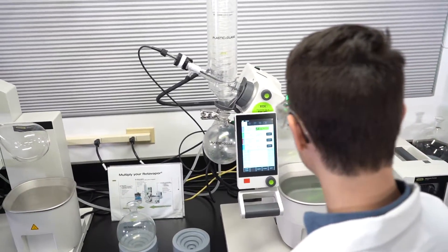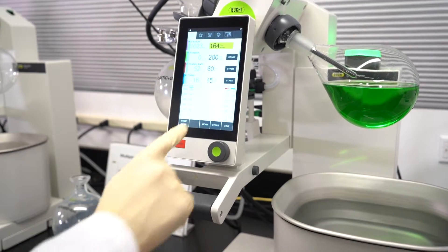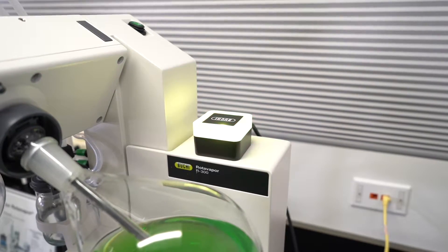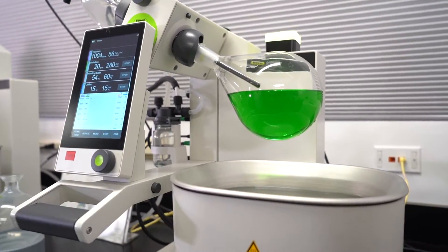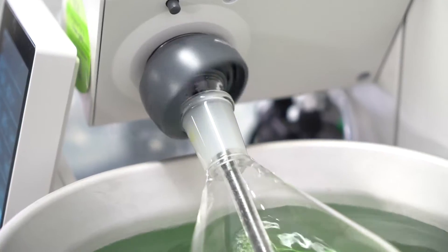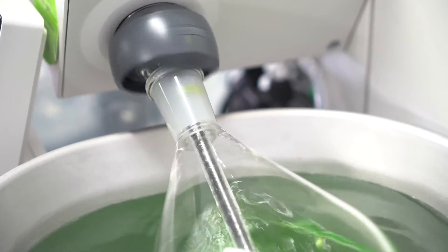However, usually some heat is provided by a bath to speed up the distillation. A manual or electronic lift lowers the flask into the bath and rotates to increase the surface area for evaporation. When the sample boils,